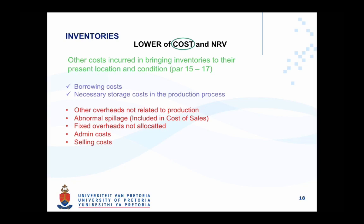Other costs include borrowing costs, which are outside the scope of our discussion this year, and necessary storage costs in the production process — for example, wine where there is a lengthy production process. There are also amounts excluded from the cost of inventories but included in the cost of sales, such as abnormal spillage and fixed overheads not allocated.